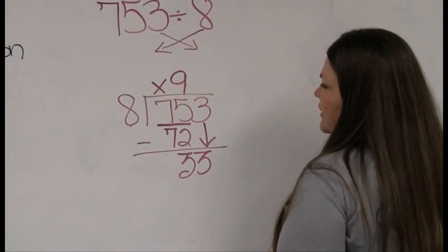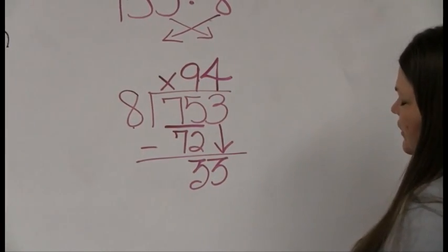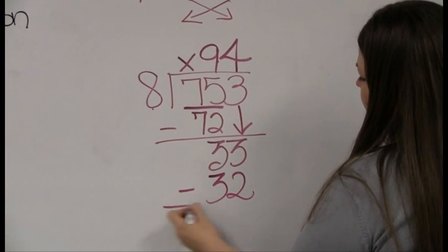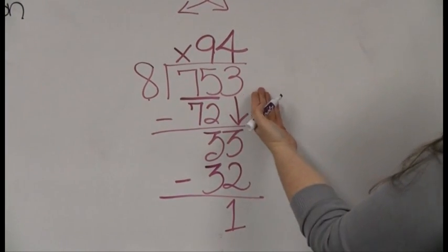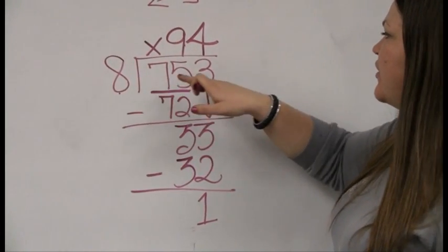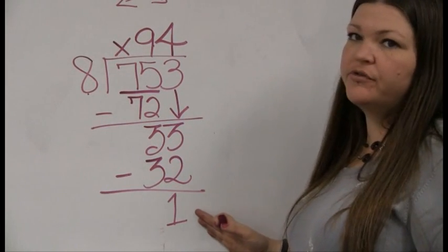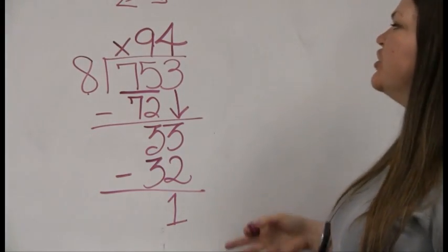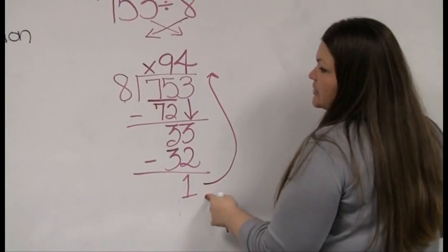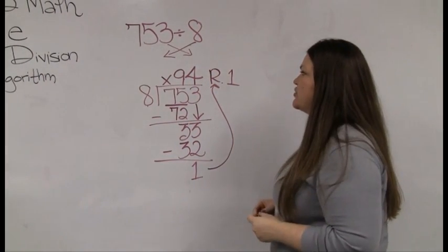Drop down a digit. 8 goes into 33 how many times? Well, 8, 16, 24, 32. Looks like it goes in 4 times. And 8 times 4 is 32. Subtract that. I have a 1 remainder. And you'll notice I don't have any more digits to drop down. Okay, so basically what we have is that 8 went into 753 94 times. However, we have one little guy who got left over who didn't get to make it into a group of 8. So for now, how we're going to deal with him is we're just going to write him as a remainder. Later, we will learn how to turn him into either a fraction or a decimal. But for now, we'll just say that's 94 remainder 1.